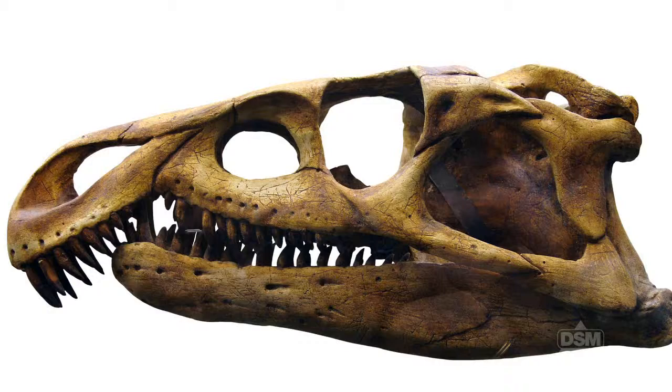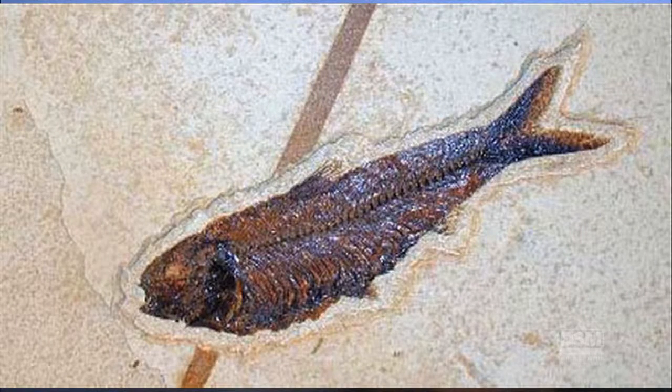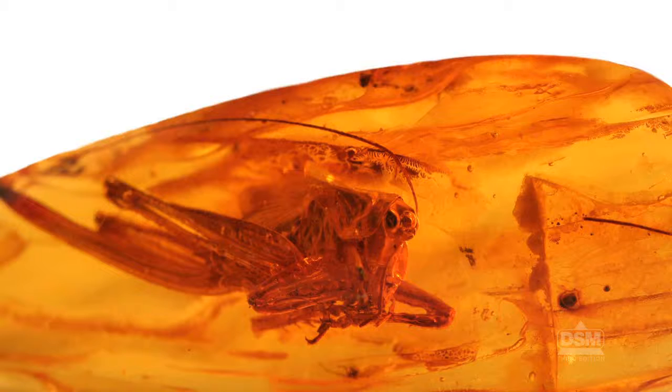Fossils can be formed from animal tracks or droppings, skeletal remains, the outline or imprint of an organism preserved in rock, or the organism itself preserved in resin.